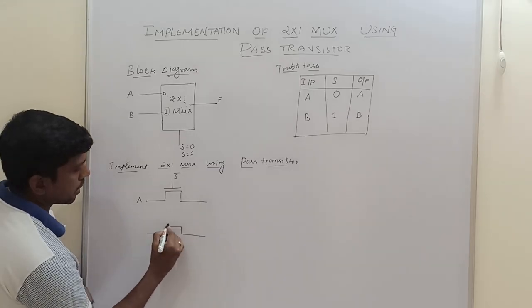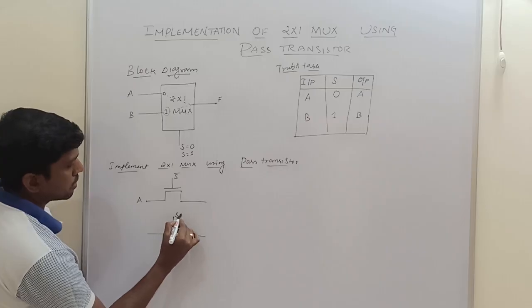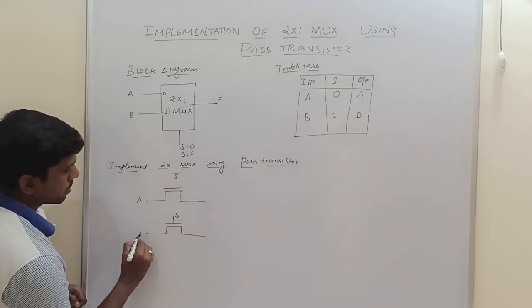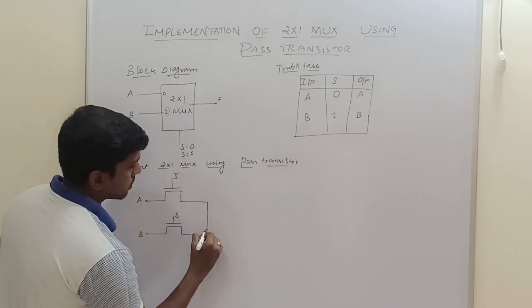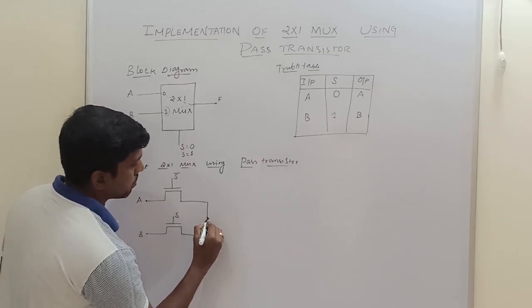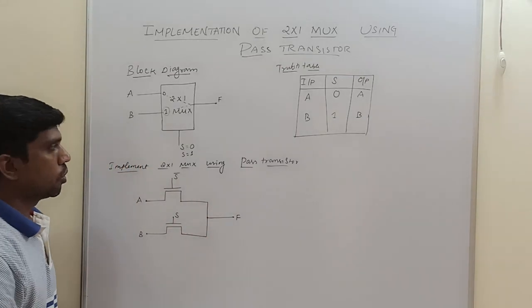Then input is A. Then it is the second PMOS transistor. The gate signal is S. So input is B. Just short these two terminals, then you get the output F. So this is the output.